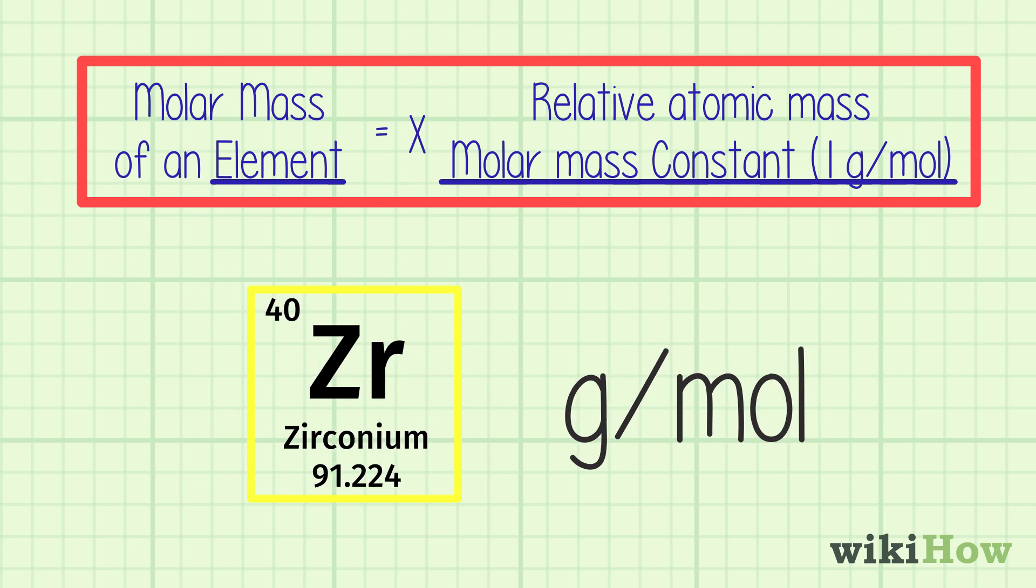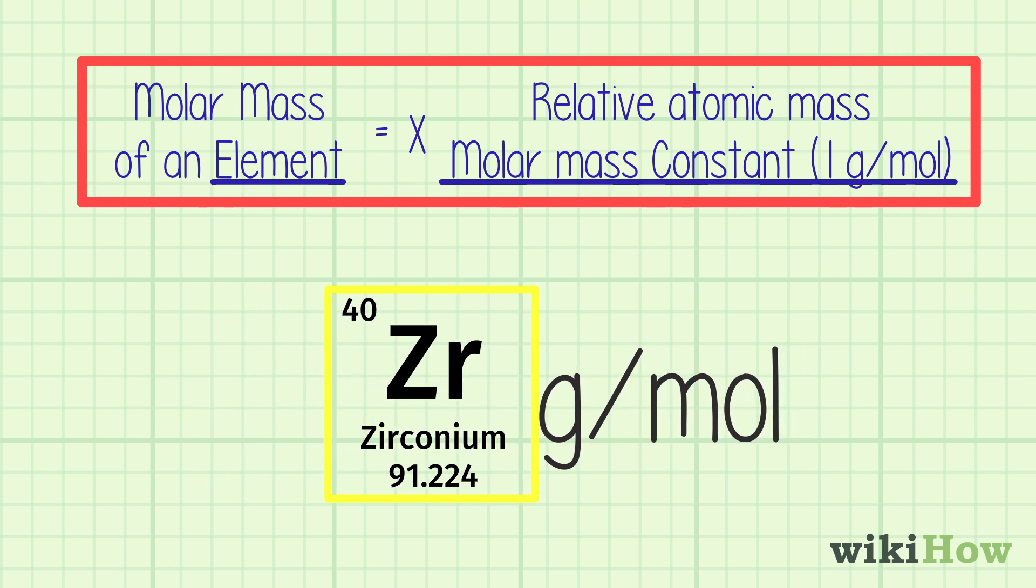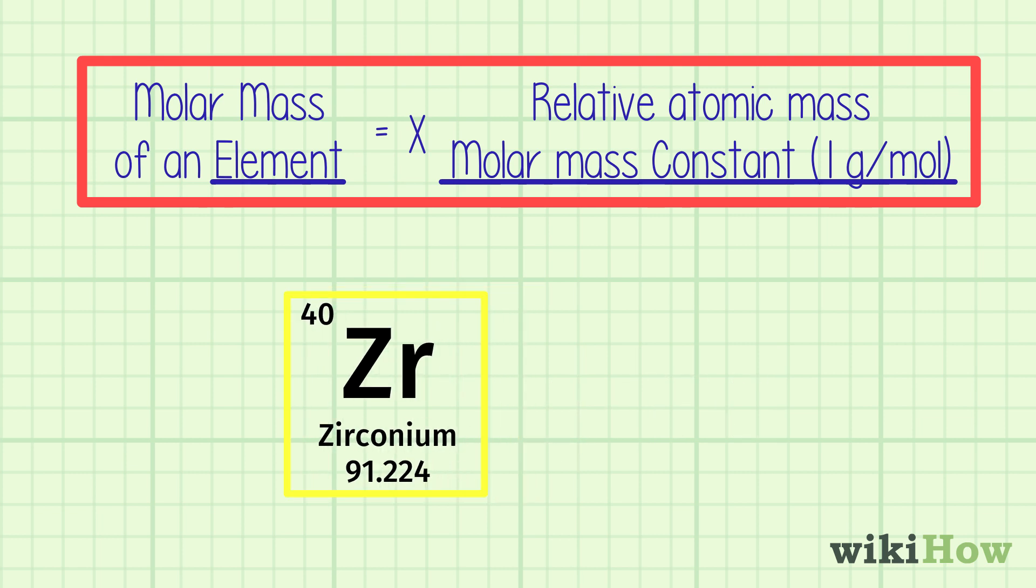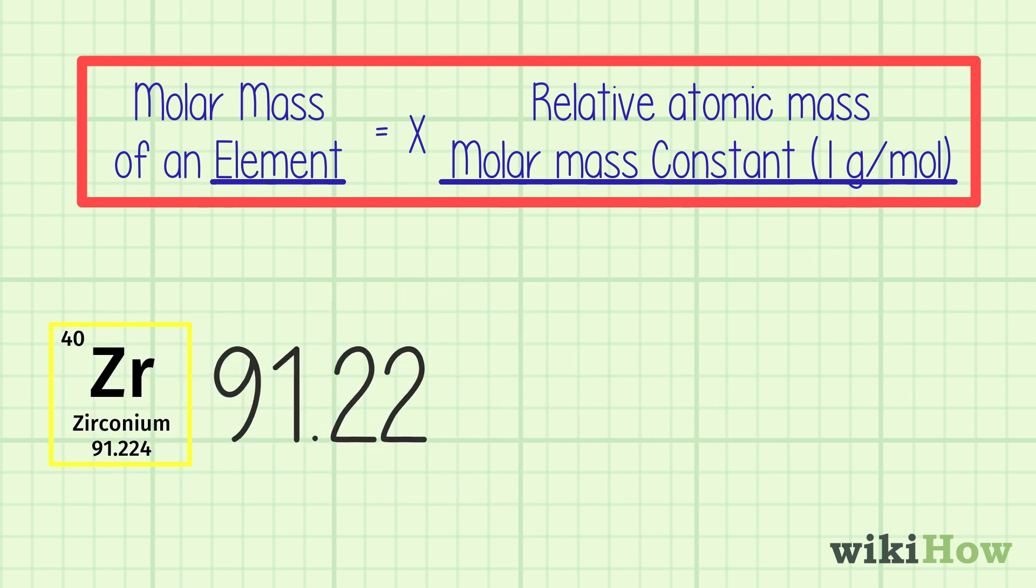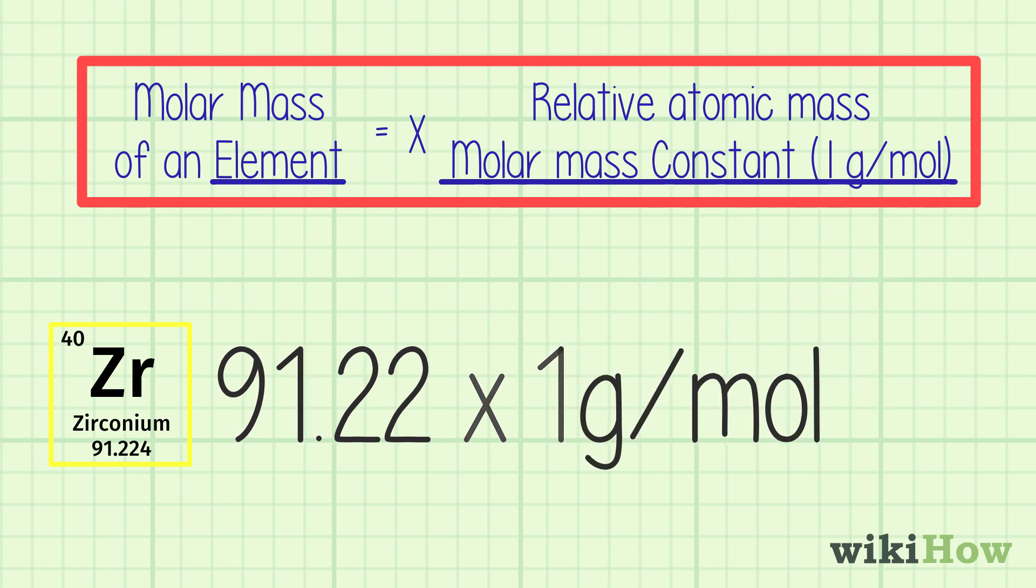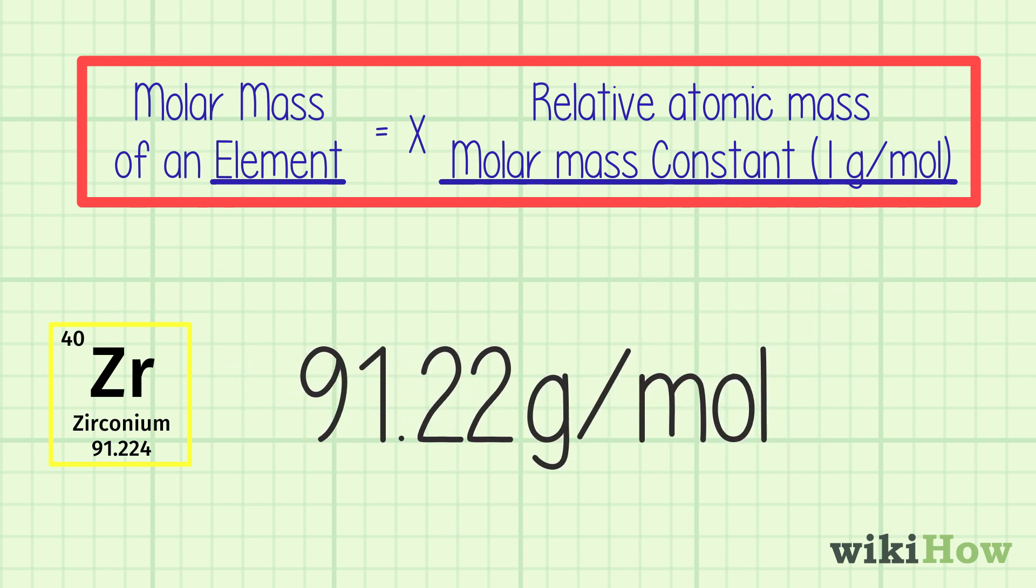For instance, zirconium has a molar mass of 91.22 times 1 gram per mole, or 91.22 grams per mole.